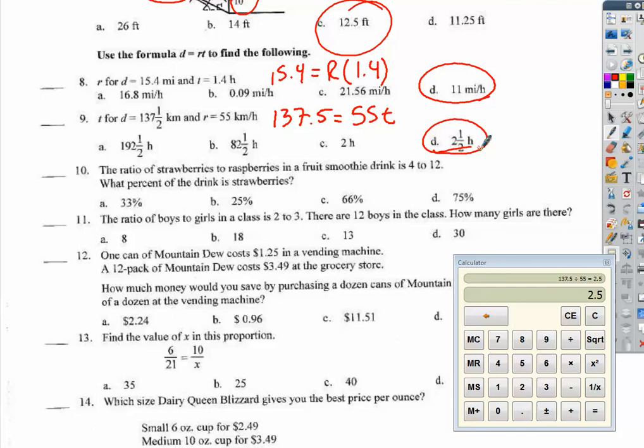Number 10. The ratio of strawberries to raspberries in a fruit smoothie drink is 4 to 12. What percent of the drink is strawberries? Now, I'll tell you right now. This is the most commonly missed multiple choice question on this one and it's because of this. 4 represents strawberries. 12 represents raspberries. So, how many total berries are in the drink? 4 plus 12 is 16. So, what percent is strawberries? 4 out of 16 total berries, which is equal to 25% B.